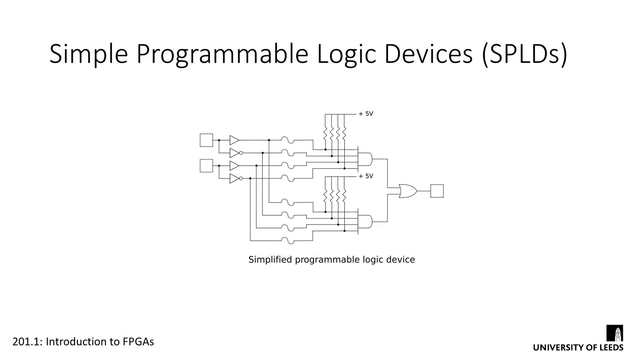Simple programmable logic devices, or SPLDs, were first developed in the early 1970s. They're silicon chips which have an undefined function at the time of manufacture. They can be used to implement digital circuits of varying specifications and can be chosen depending on parameters like the number of gates required, the number of inputs and outputs, or things like maximum operating frequency. They tend to have a small number of gates available and are perfect for small logic designs.